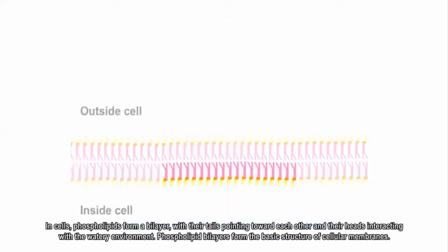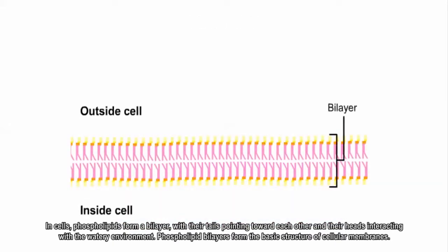In cells, phospholipids form a bilayer, with their tails pointing toward each other and their heads interacting with the watery environment. Phospholipid bilayers form the basic structure of cellular membranes.